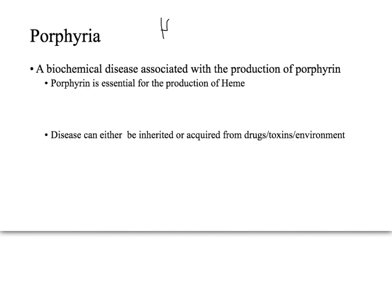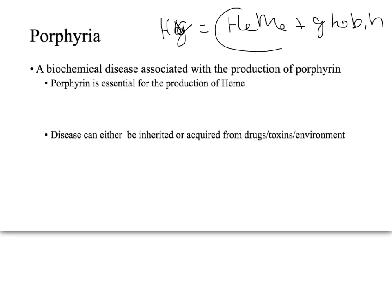Hemoglobin, or HBG, is essentially a heme plus a globin chain. And so what is porphyrin? Porphyrin is used to make up heme. Heme is simply iron in the two-plus state plus protoporphyrin.